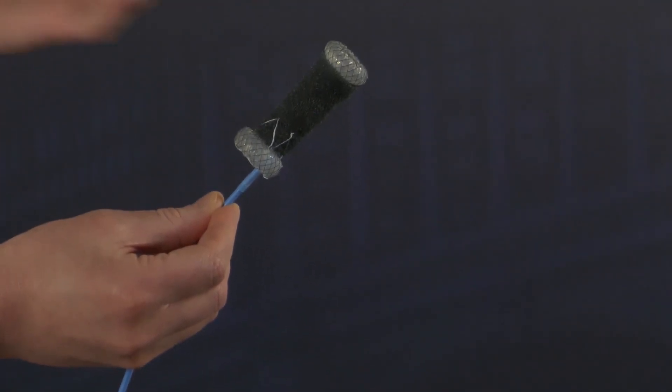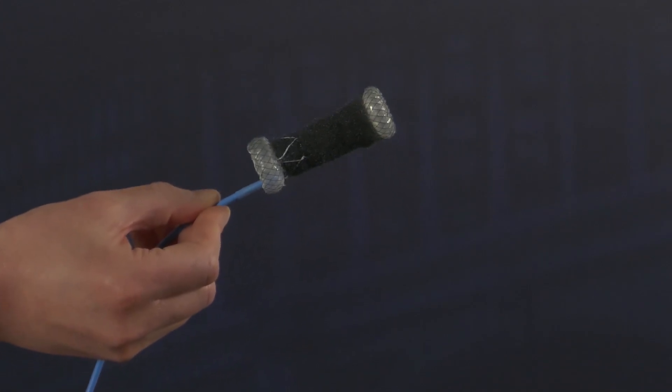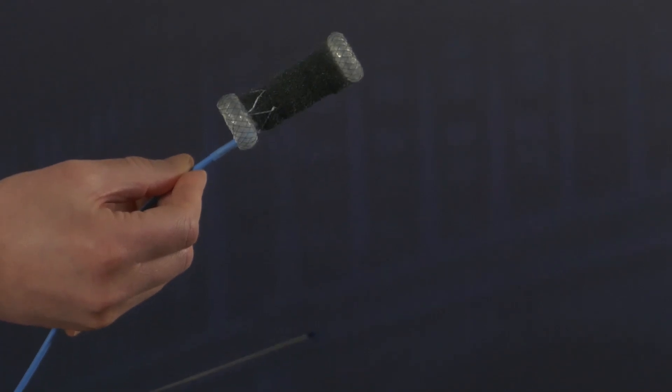You can endoscopically check if it's in place. I usually say that it's better to place it a little bit more distal because you can always pull it back a little bit. It's more difficult to push it in. But that's the demonstration of the vacuum stent.